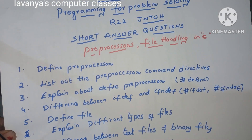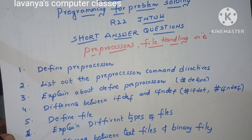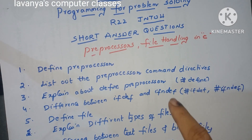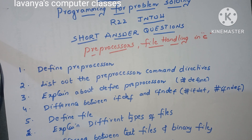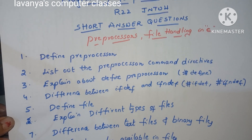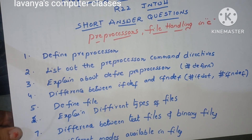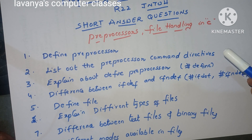That is also Unit 3. In Unit 3 there are two chapters: one is preprocessors and the second one is file handling in C language. The short answer questions — the first ones are from the first chapter, that is preprocessors.